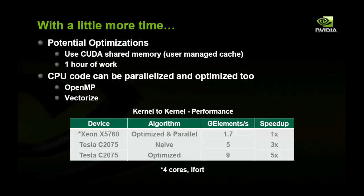If you have a bit more time, there are optimizations you can make. The big one is using CUDA shared memory, which we think of as a fast user-managed cache. With about one hour of work, you can optimize this to get up to about 9 giga elements per second. You could also optimize the CPU code by parallelizing it with OpenMP and vectorizing it, which yields about 1.7 giga elements per second. So in the end, our naive GPU version gives about a 3x speedup over an optimized parallel Xeon, or with a bit of extra GPU optimization, a 5x speedup — versus four cores on the Xeon 5760.